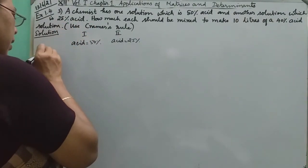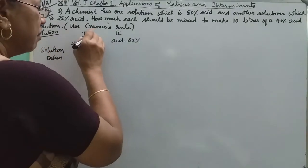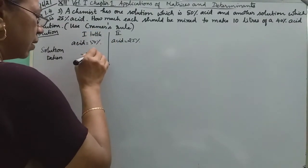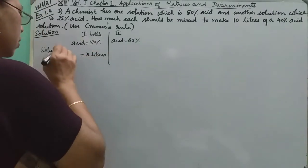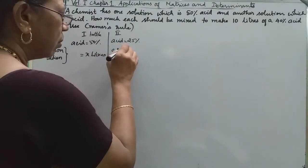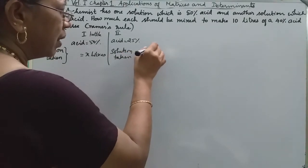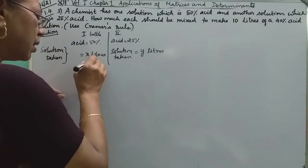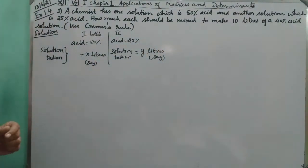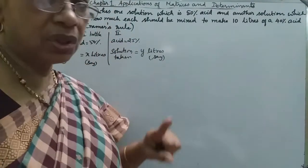The solution taken in the first bottle is equal to X liters. In the first bottle we have X liters of solution, and in the second bottle we have Y liters of solution.